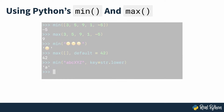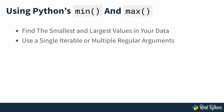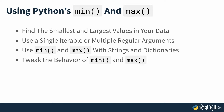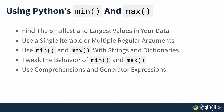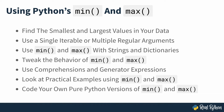In this course, you'll learn how to use Python's min and max to find the smallest and largest values in your data. Call min and max with a single iterable or with any number of regular arguments. Use min and max with strings and dictionaries. Tweak the behavior of min and max with the key and default arguments. Use comprehensions and generator expressions as arguments to min and max. Look at some practical examples showcasing the usefulness of min and max, and code your own versions of min and max in pure Python, which will help you understand how these functions work internally.